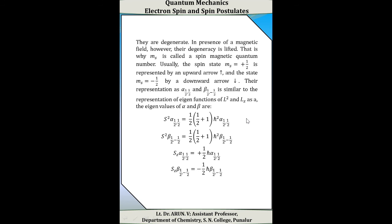These two states are degenerate. In the presence of a magnetic field, the degeneracy is lifted, which is why m_s is called the spin magnetic quantum number. The spin state m_s = +1/2 is represented by an upward arrow, and the state m_s = −1/2 is represented by a downward arrow.